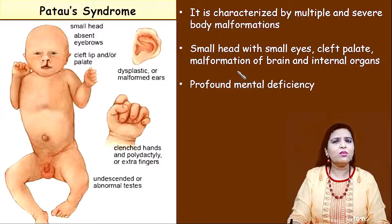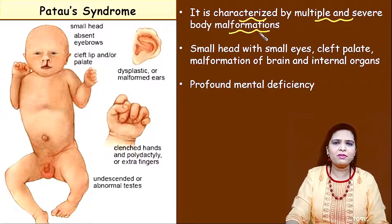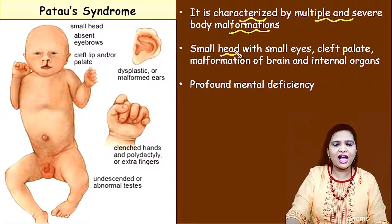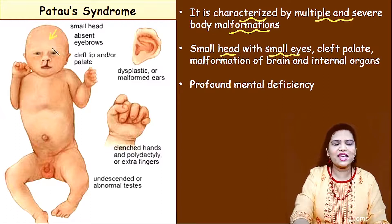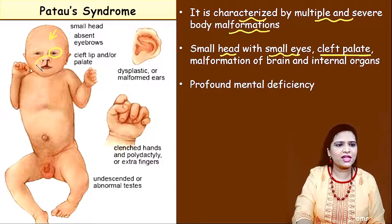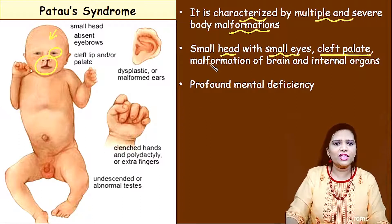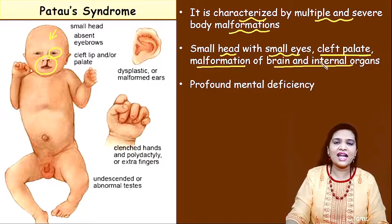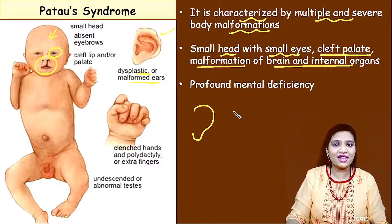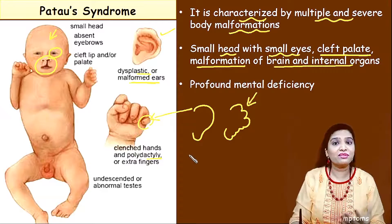In Patau syndrome, what are the symptoms? It is characterized by multiple and severe body malformations. The child will have a small head with small eyes. Very importantly, cleft palate will be present — in the region where the nose and mouth meet, there is an open space. Malformation of the brain and other internal organs occurs. The ears will be dysplastic or malformed. And the baby will have polydactyly — instead of five fingers, there is one extra sixth finger.